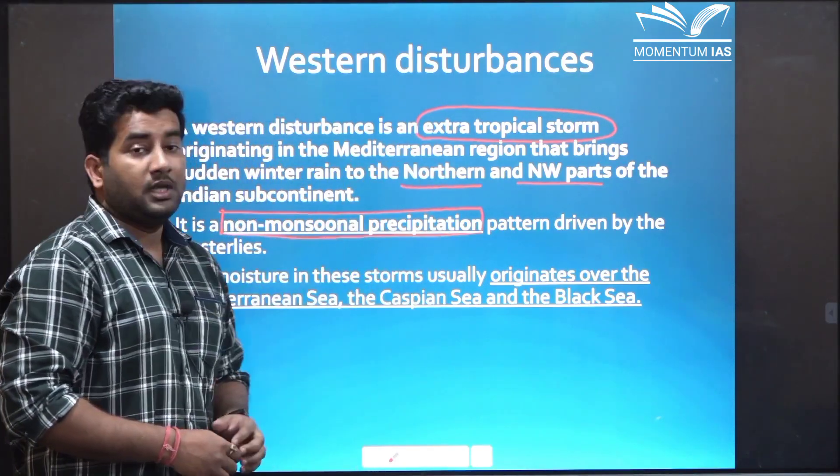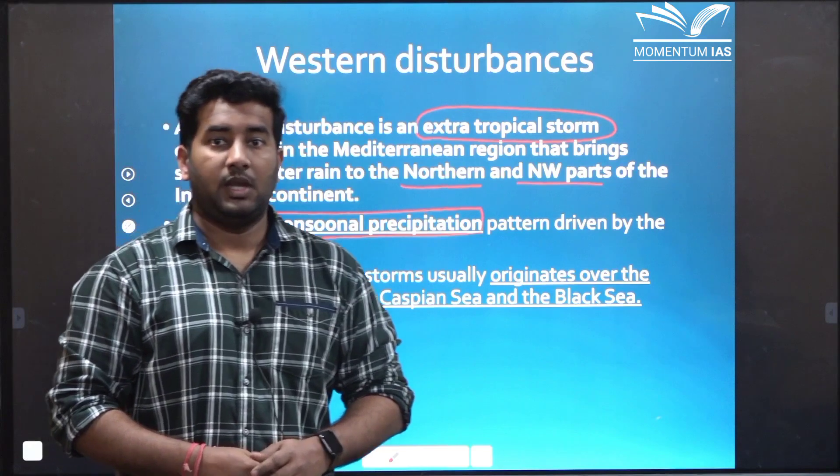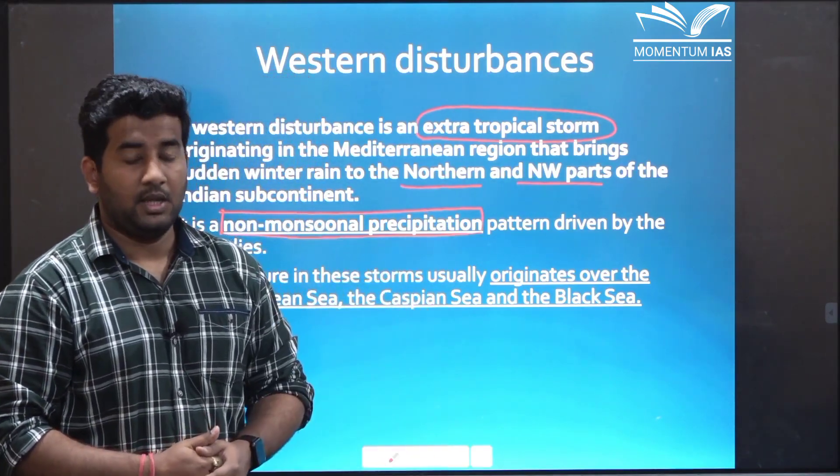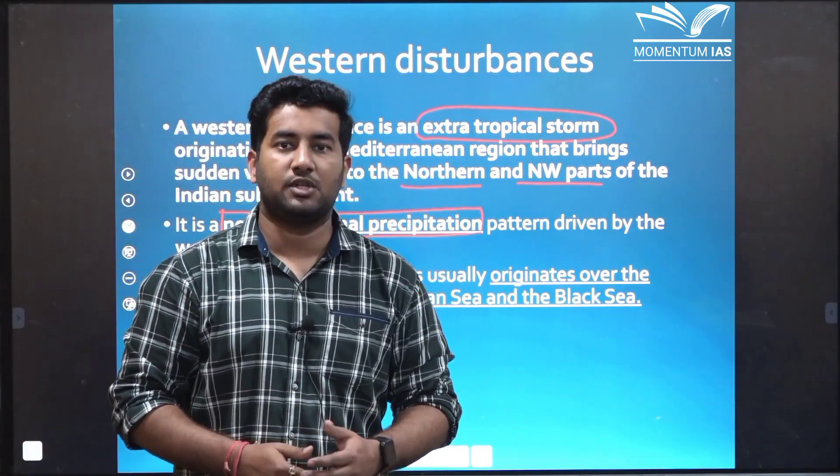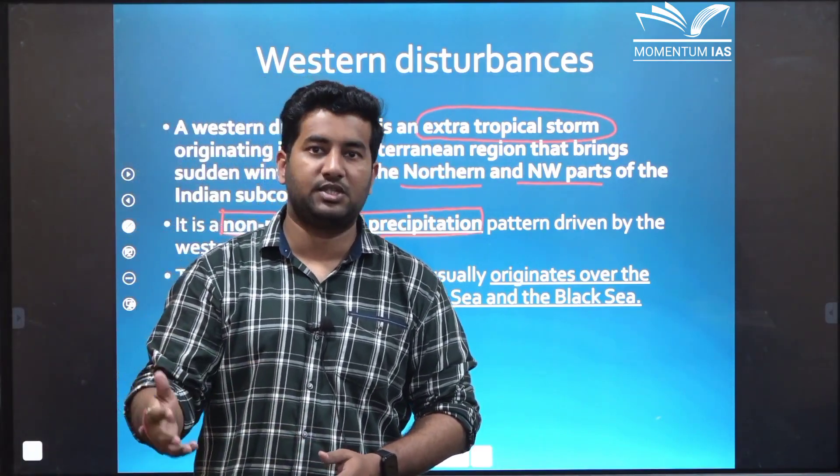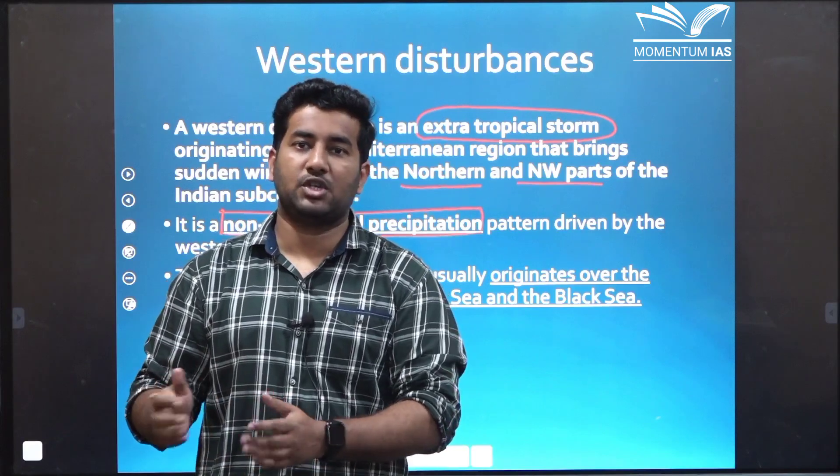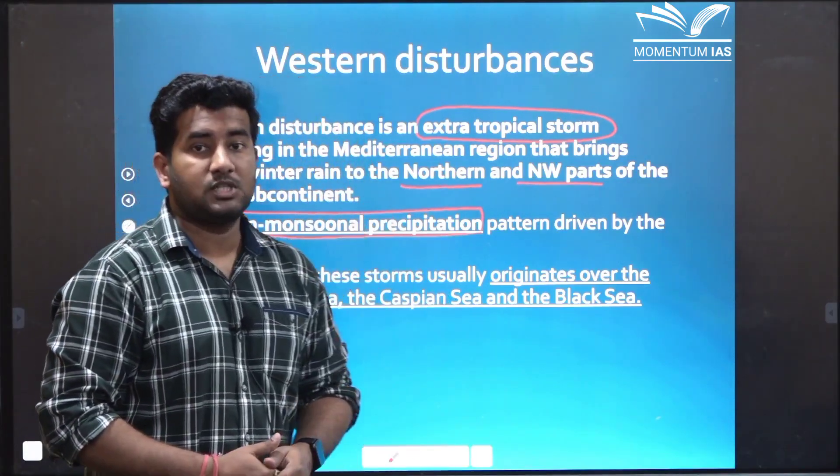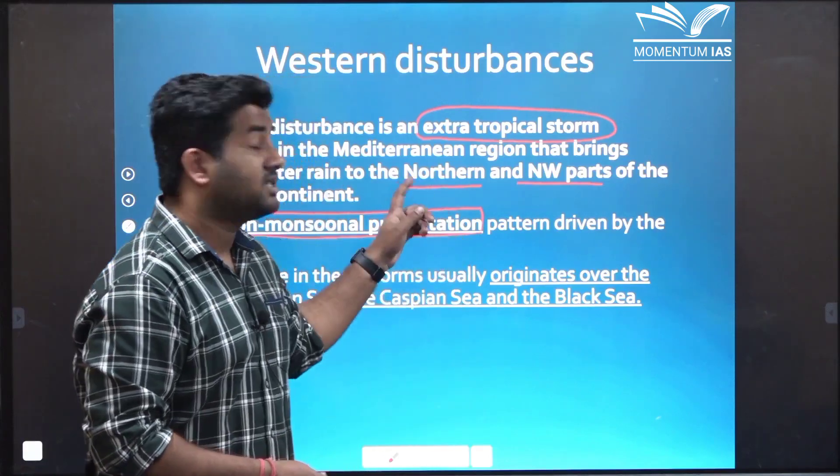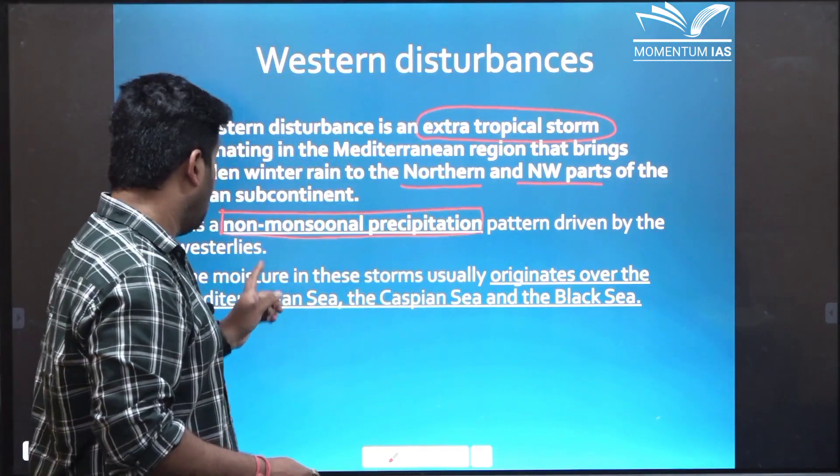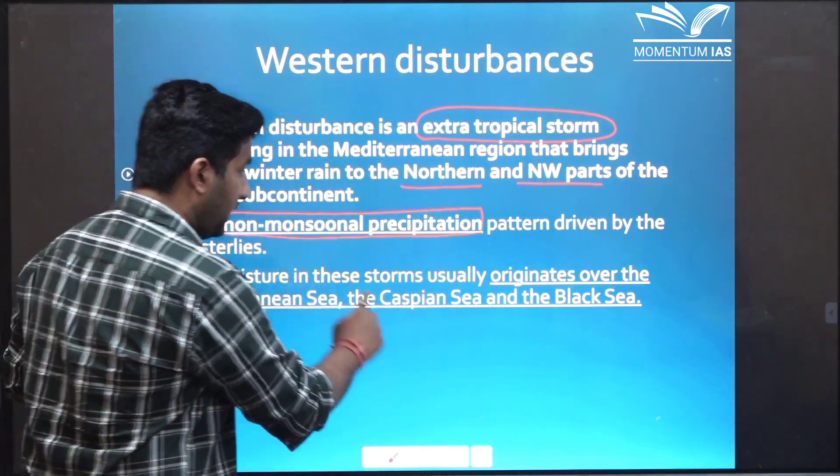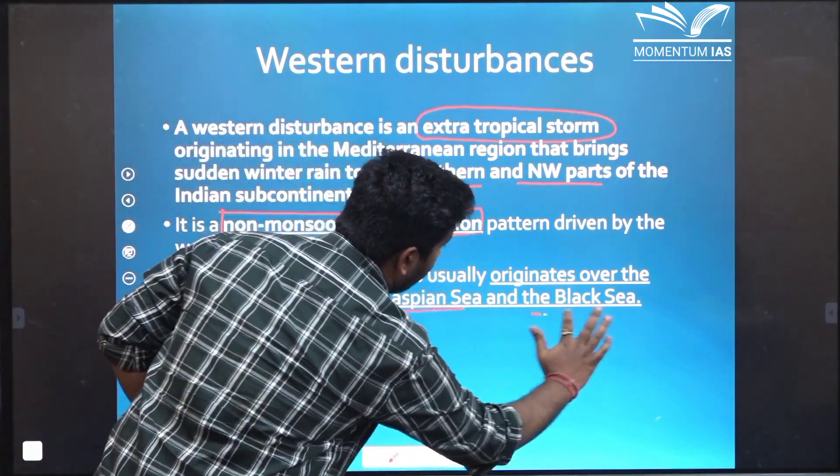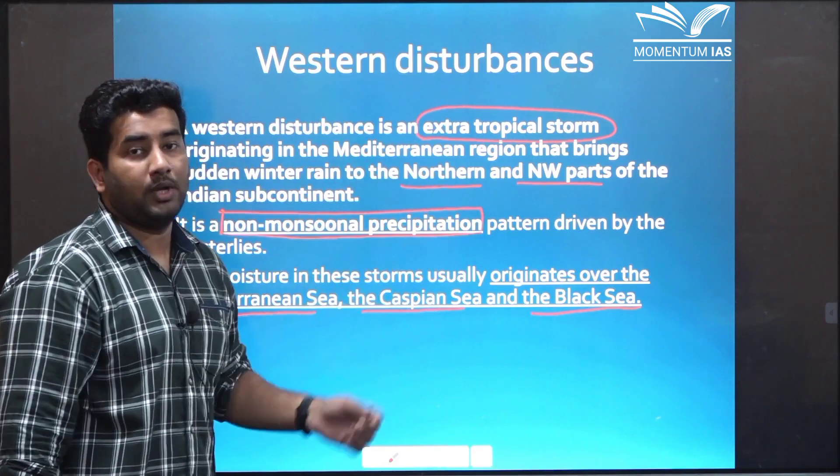Since it's a mid latitude storm it has to gain moisture from some water bodies to deliver it to the subcontinent. In case of tropical storms they are generally originated in the sea region from where moisture is adequately available. However, in case of extra tropical storms there is scarcity of moisture. So the western disturbances gain this moisture from Mediterranean Sea, Caspian Sea and Black Sea.